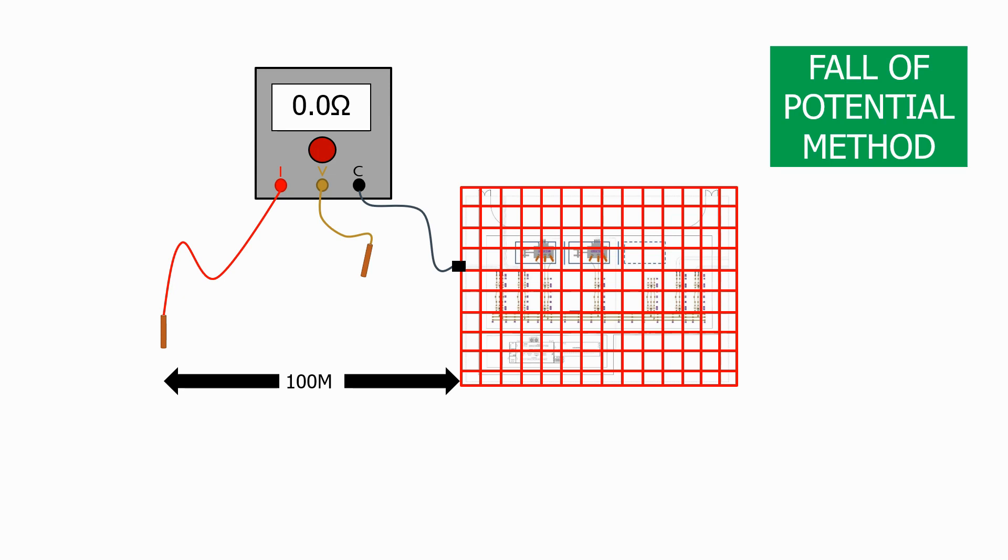We are going to do a resistance measurement at equidistant intervals between the substation and the current probe which is 100m away. So let's do a resistance measurement every 10m.